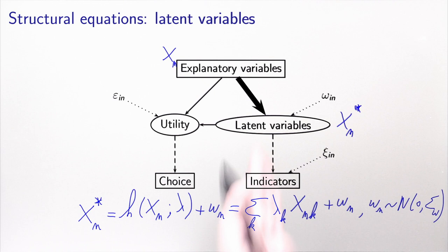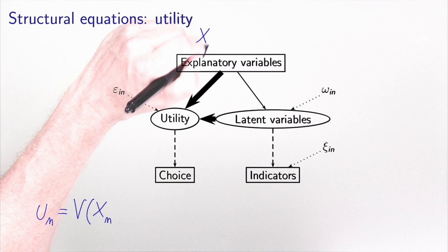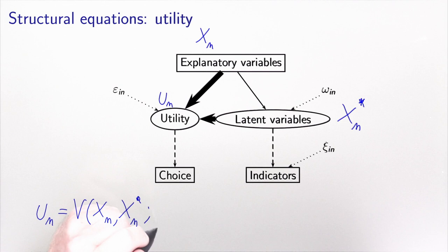Let's move to the structural equation for the choice model. We have u_n, the vector of utility, which is a combination of a deterministic part depending on x_n — the explanatory variables — but also on x-star_n, the latent variables. The latent variables will explain the utility function. We have parameters to estimate, which we call beta as usual, and an error term epsilon_n.